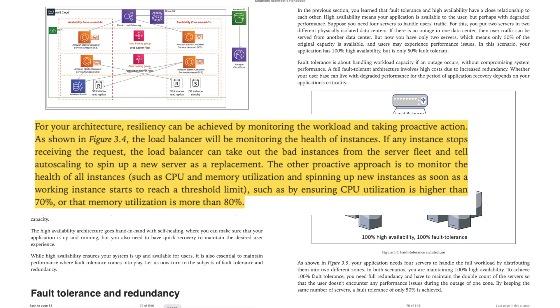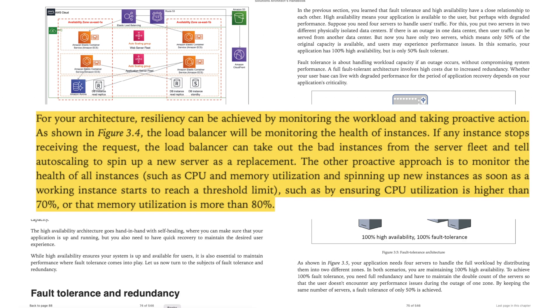Let me read an excerpt from page 85: 'For your architecture, resiliency can be achieved by monitoring the workload and taking proactive actions, as shown in figure 3.4. The load balancer will be monitoring the health of instances. If any instance stops receiving requests, the load balancer can remove the bad instances from the server fleet and tell auto-scaling to spin up a new server as a replacement. The other proactive approach is to monitor CPU and memory utilization and spin up new instances as soon as a working instance reaches a threshold, such as CPU utilization above 70% or memory utilization above 80%.' That's knowledge you can put to use right now.